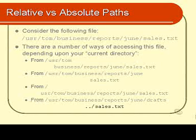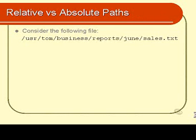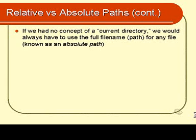Keeping all that in mind, let's look at the following important points. If there was no such thing as a current directory, then we would always have to use the full path — the full file name — for any file we want to access. You'd have to type in that whole thing: /user/tom/business... there would be no shortcut. You wouldn't be able to go into the dune directory and just type sales.txt. That whole thing is known as an absolute path.